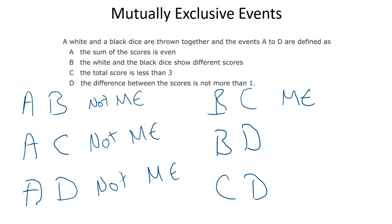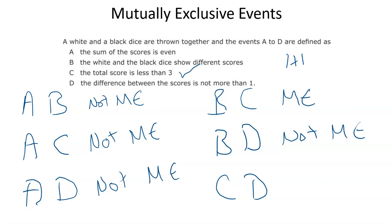B and D: the white and black show different scores, and the difference between the scores is not more than one. That's fine — we can have a difference of one, like five and four: they're different, and the difference is not more than one. So these are not mutually exclusive. And the last one, C and D: total score less than three, and difference between scores not more than one. To have a total less than three, the only way is one plus one. The difference between those scores is zero, which is not more than one. So both conditions are satisfied, and this is not mutually exclusive either.